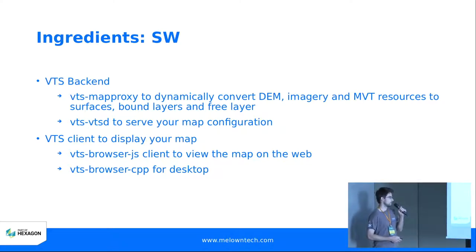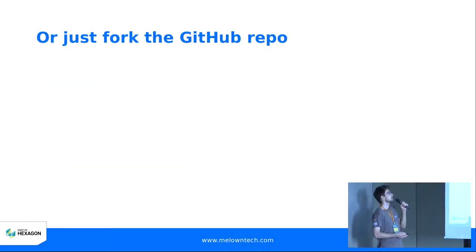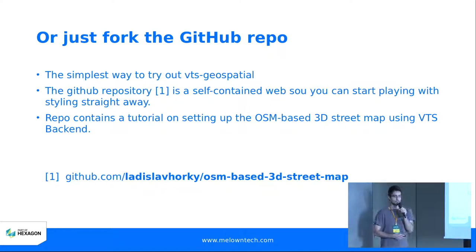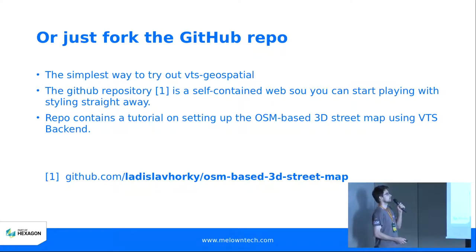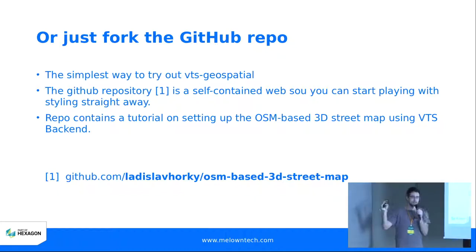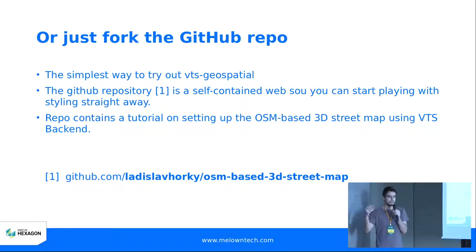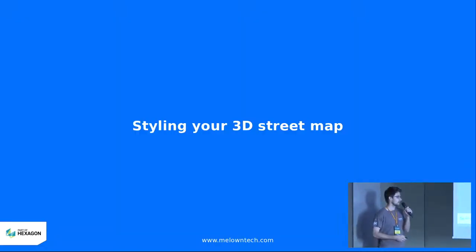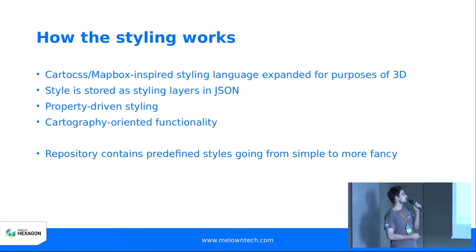Or you can go for VTS Browser C++, which works for desktop — there's a sample application written for that already. The easiest way, as I said, is just to fork this repository on GitHub. Basically you can fork it and everything is explained there. There are some sample files you can try your styling on or base your further work in styling of those files — you can piggyback on them.